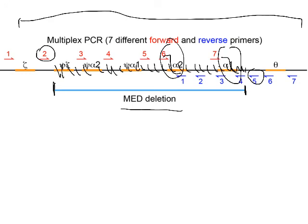Instead of doing a series of tests, we can do one single multiplex PCR reaction. The advantage is it's cheaper, faster, and it works because we're measuring the distance between primers. We know from studying human populations exactly how far apart those primers will be if particular deletions have occurred. That's how we use multiplex PCR to detect genomic deletions.